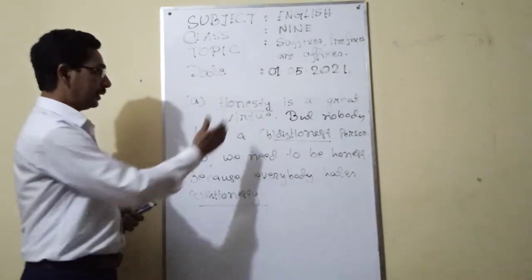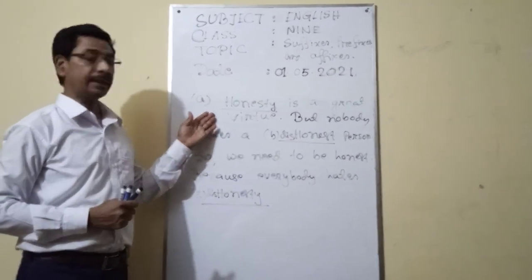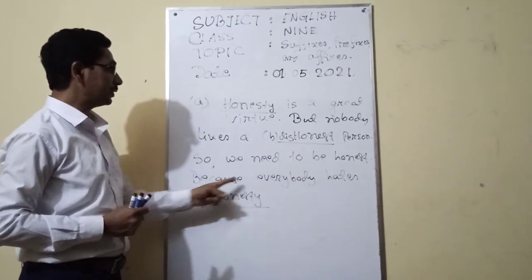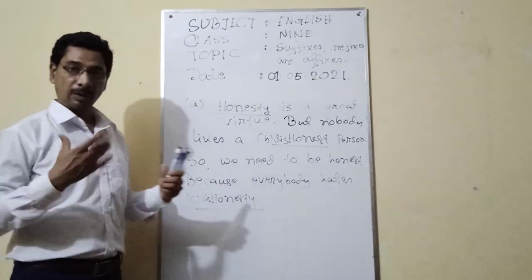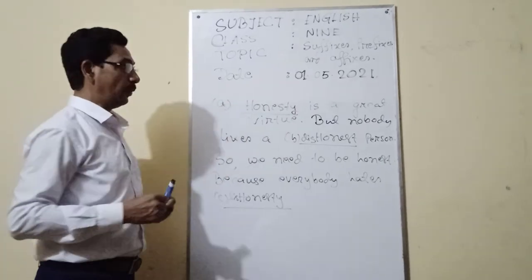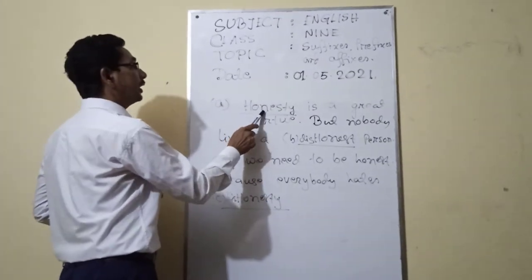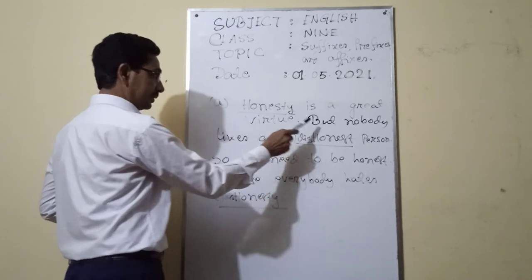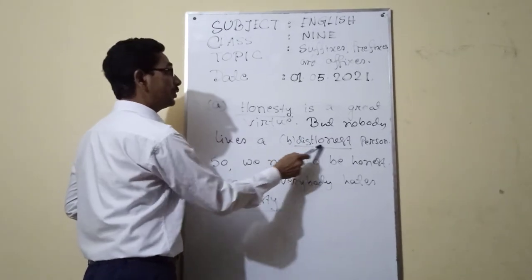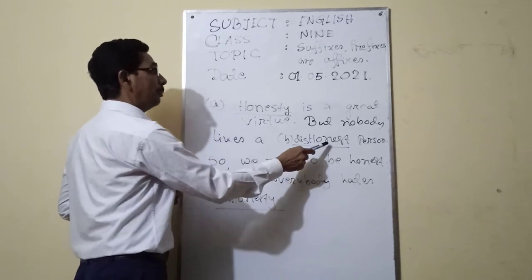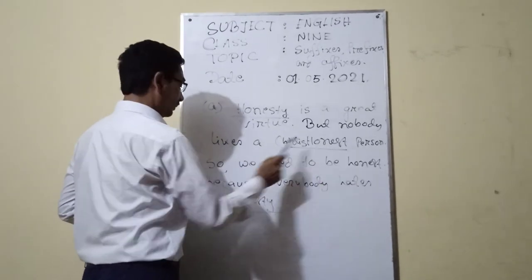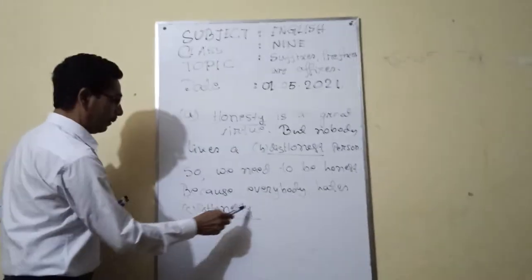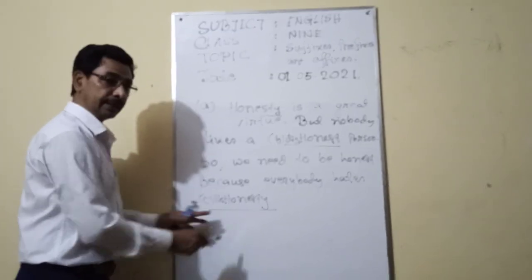So before the solution, I had written: 'Honest is a great virtue. But nobody likes a honest person. So we need to be honest because everybody hates honest.' After completing suffixes, prefixes, and affixes: 'Honesty is a great virtue' — I added the syllable 'y', so this is a suffix. 'Nobody likes a dishonest person' — I added 'dis' before 'honest', so this is a prefix. 'Everybody hates dishonesty' — I added 'dis' and 'y' with the main word 'honest', so this is an affix.